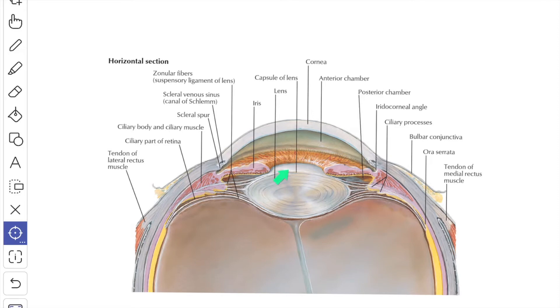It presents anterior surface, posterior surface and an equator. This is the equator which is a rounded border. The posterior surface is more convex than the anterior and rests on the hyaloid fossa of the vitreous body. The central points of anterior and posterior surfaces are known as the poles, and the line joining the two poles forms the axis of the lens.